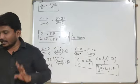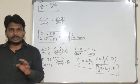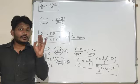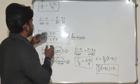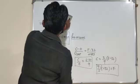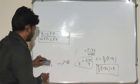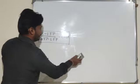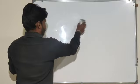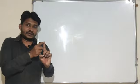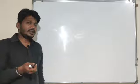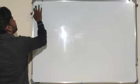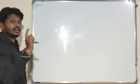Now let me introduce one more scale — the Kelvin scale. Temperature can be measured in Celsius, Fahrenheit, or Kelvin. This third scale is the Kelvin scale. To understand it, I first need to establish the lower fixed point and upper fixed point values for Kelvin.